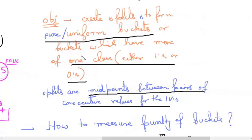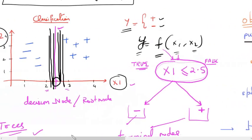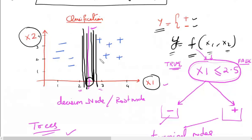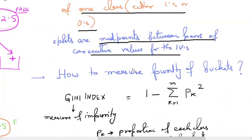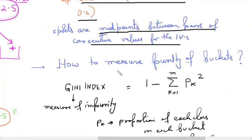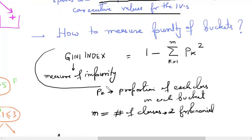The question is: how do we measure impurity? A computer will not draw plots like this — that is for human understanding. If you have 10 independent variables your data is in 10 dimensions, making it almost impossible to figure out where to split visually. That is where the underlying math of a decision tree comes in. We use a parameter called the Gini index — a mathematical parameter which measures the impurity in a bucket. The goal of a decision tree is to minimize the Gini index.